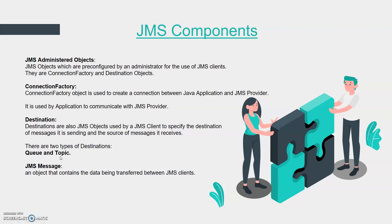Finally, JMS message is the object that gets transferred from one application to another. To summarize the JMS administered objects: connection factory allows your application to create a connection with the JMS provider, destination specifies where to deliver the message, and there are two destinations — queue and topic. We'll cover all these things in detail in the coming videos. Thank you for watching!